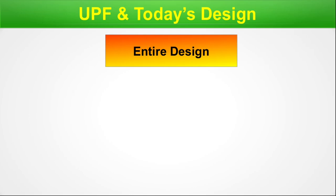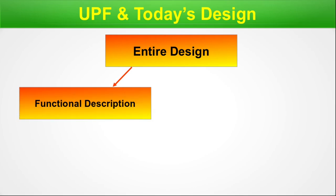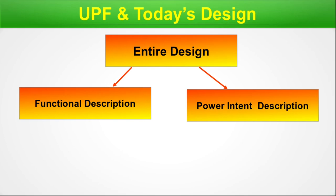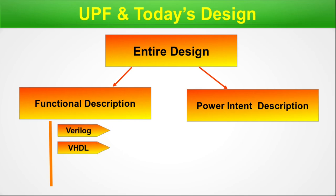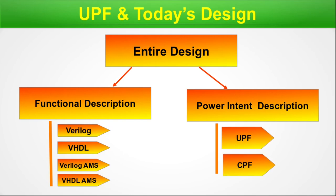Here is how we can place UPF. There is the entire design, then a functional description - which could be Verilog or VHDL - and another part is the power intent description, which talks about different power domains and distribution. Functional description can be written in Verilog, VHDL, Verilog AMS, or VHDL AMS. Power intent can be written in UPF or CPF. CPF is from Cadence; our focus in this session is UPF.